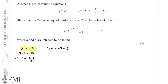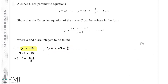The next step is to substitute this expression for t into the equation for y. Our end goal is an expression in terms of x equal to y. We have y in terms of t, and we now have t in terms of x, so substituting will give us y in terms of x.